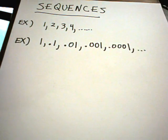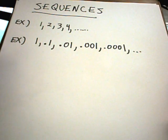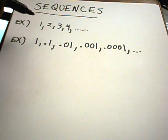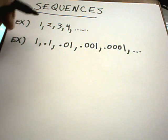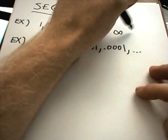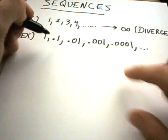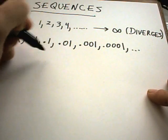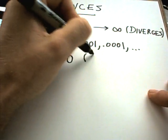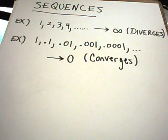The question you'll typically ask about sequences is whether the sequence converges or diverges. In the case of 1, 2, 3, 4, the numbers keep getting bigger and bigger, going off to infinity — so that sequence diverges. The next sequence is getting smaller and smaller, approaching zero, so we would say that sequence converges.